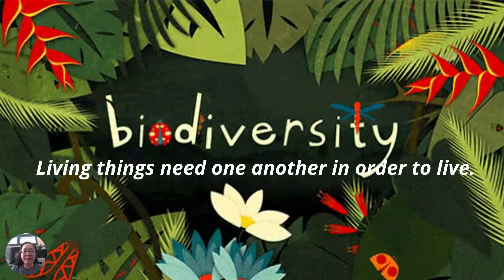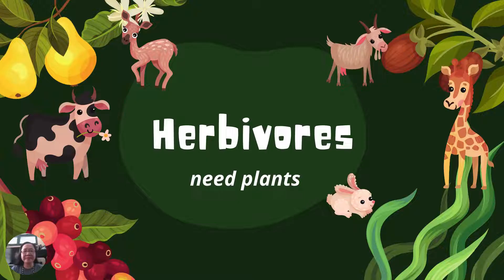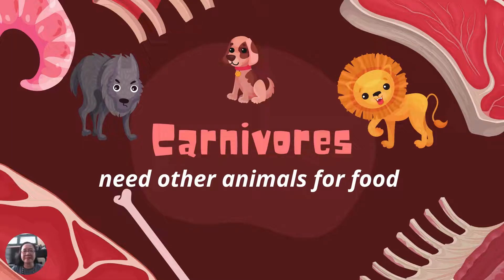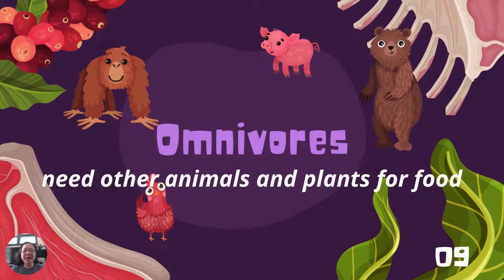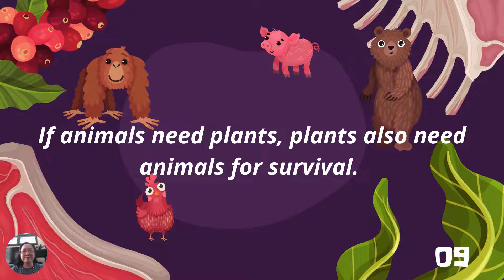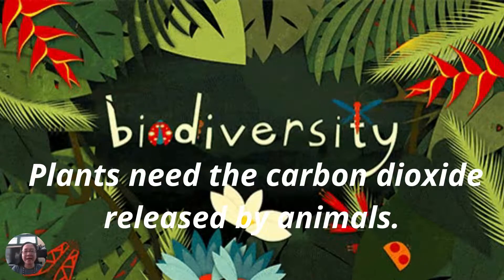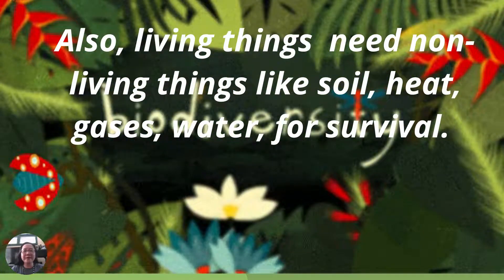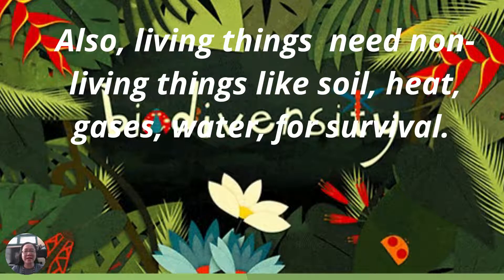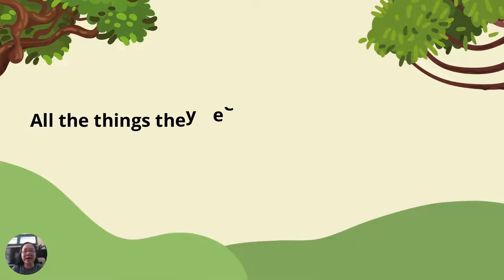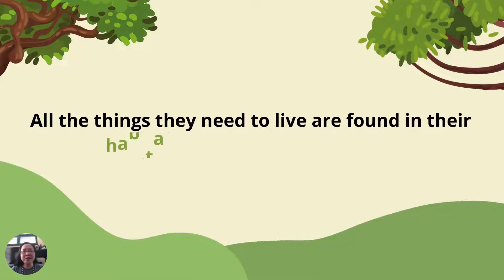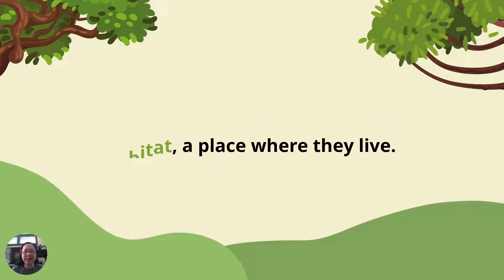Living things need one another in order to live. Herbivores need plants. Carnivores need other animals for food. Omnivores need other animals and plants for food. If animals need plants, plants also need animals for survival — plants need the carbon dioxide released by animals. Living things also need non-living things like soil, gases, and water for survival. All the things they need to live are found in the habitat, a place where they live.